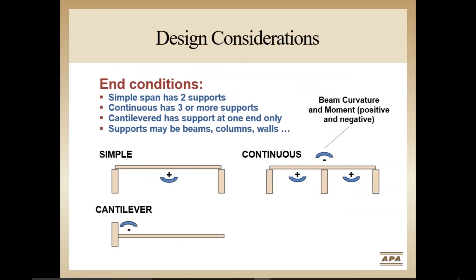Another aspect of beam design is the condition in which the beam is supported. Most beams are simply supported with one support on either end. If the beam spans over three or more supports, it is a continuous beam. In the case of a continuous beam, continuity at the interior supports results in less deflection at each of the spans. Not only is there a moment peak near the mid-span, as with the simple span, but there's also a moment peak over the intermediate support. This is referred to as a negative moment, since the curvature is opposite to the positive moment at mid-span. With a beam cantilever, the greatest moment occurs at the base of the cantilever, and this is also considered a negative moment.